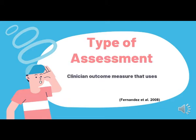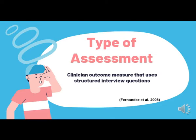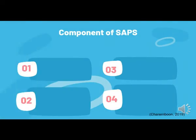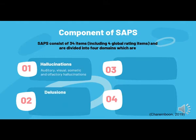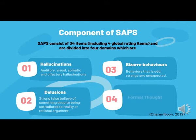The type of assessment is a clinical outcome measure that uses structured interview questions. SAPS consists of 34 items including 4 global rating items, and is divided into 4 domains: hallucination, delusion, bizarre behaviour, and formal thought disorder.